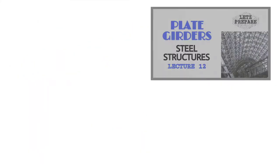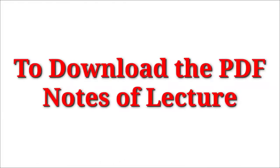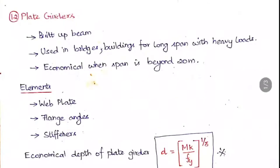Let's prepare on the plate girders. First, what is a plate girder? It is also a beam. We have already seen different types of beams, and now we will be seeing the girders. The steel beam, when it is exceeding a long length, we will be connecting two or more beams together and also providing a built-up beam — meaning increasing the thickness of the beam which is not available as per the specification given in the code book. We will be using this for bridges and buildings for long span and with heavy load. It is economical when the span is beyond 20 meters.